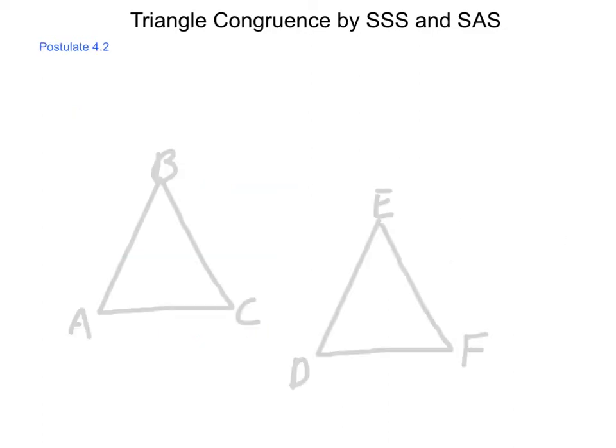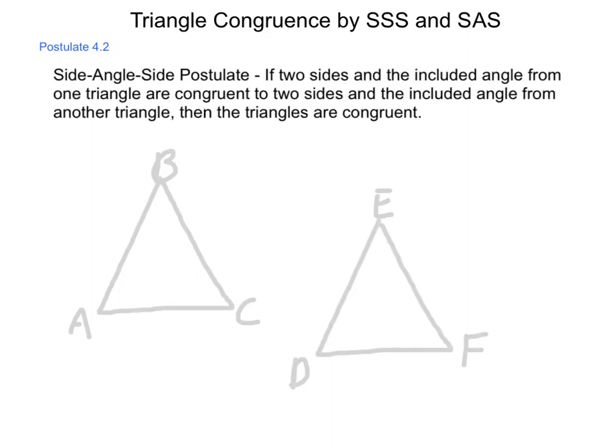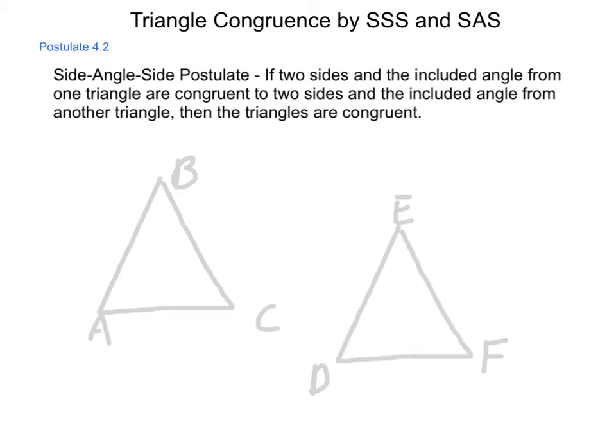Postulate 4.2 is the side-angle-side postulate, and this states that if two sides and the included angle from one triangle are congruent to two sides and the included angle from another triangle, then the triangles are congruent. In other words, if I know that AB is congruent to DE, and BC is congruent to EF, and that I know that angle B is congruent to angle E, then I have enough information by side-angle-side. The order here is important: two sides and an angle trapped in between are congruent to each other.